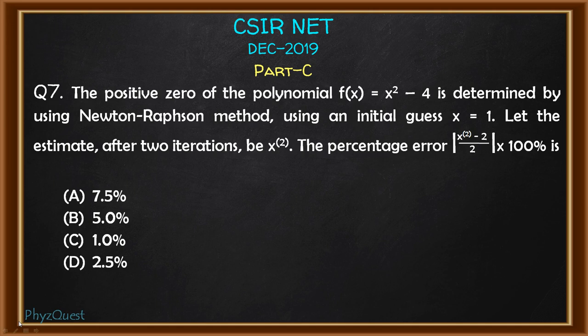The question is: the positive zero of the polynomial f(x) = x² - 4 is determined by using the Newton-Raphson method, using an initial guess x = 1. Let the estimate after 2 iterations be x2.